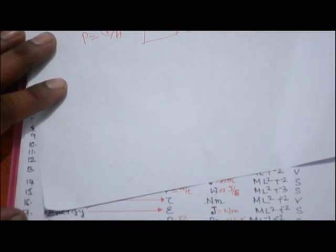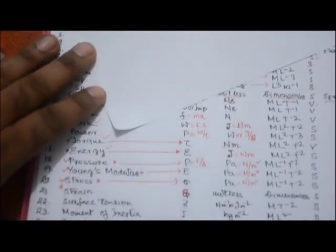Strain is a ratio, so it is unitless and dimensionless. Young's modulus is denoted by E, stress by sigma (σ), and strain by epsilon (ε). Strain being dimensionless is very important to remember.